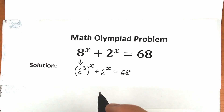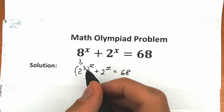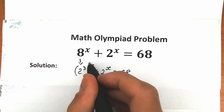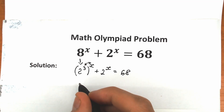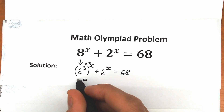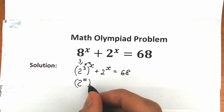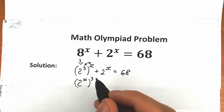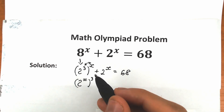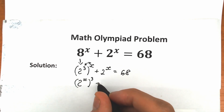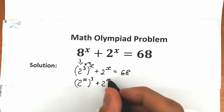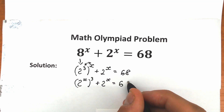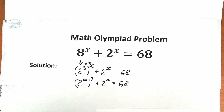What we're going to do next? We should know a really great rule of interchange — we can easily swap the 3 and the x. We can write this as 2 to the power x, raised to the power 3rd, because we can swap these powers. So plus 2 to the x, equal to 68. This is our second step.